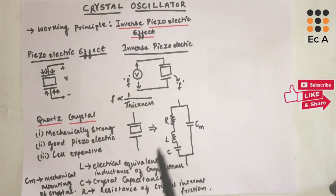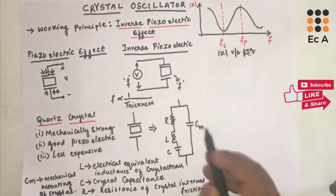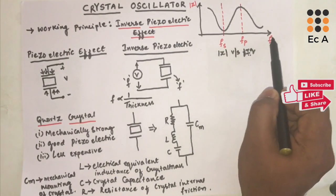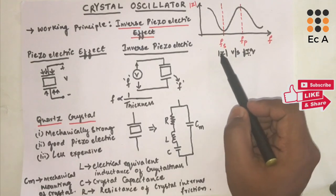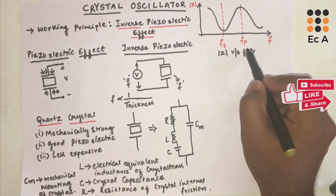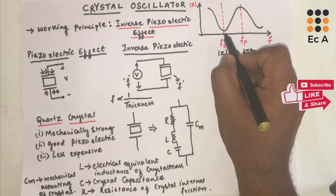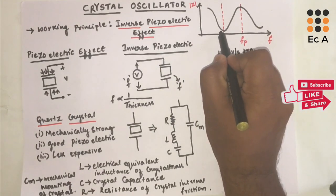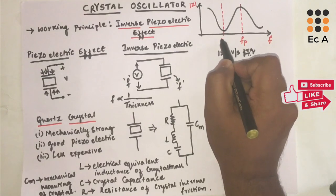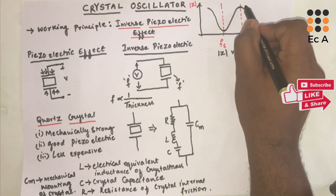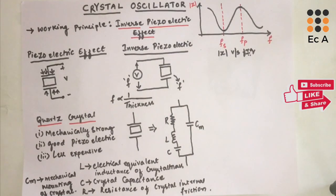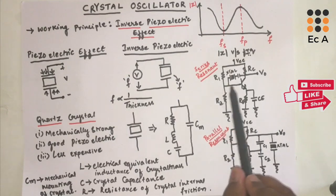The crystal represented by its equivalent electrical circuit has two resonating frequencies: the first is series resonant frequency and the second is parallel resonant frequency. The impedance versus frequency graph shows fs (series resonant frequency) and fp (parallel resonant frequency) on the x-axis with impedance on the y-axis. At series resonant frequency, the impedance of the crystal is low, and at parallel resonant frequency, the impedance of the crystal is high.